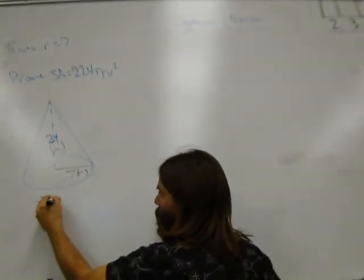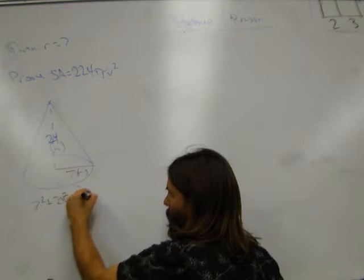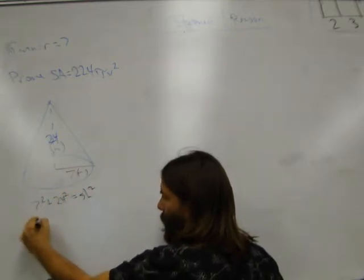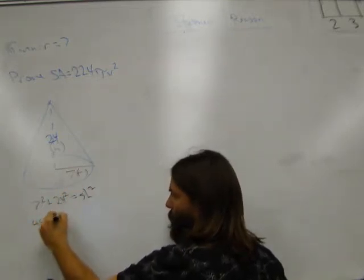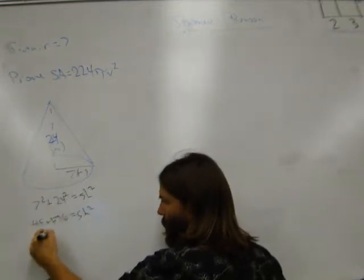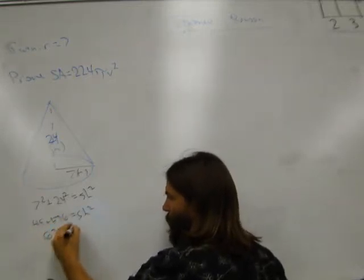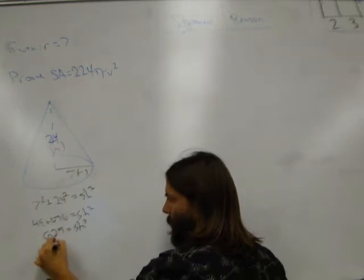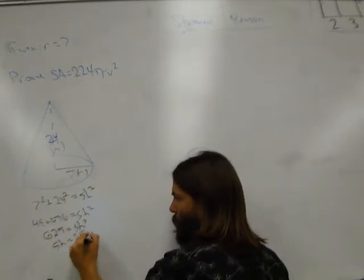It's going to be 7 squared plus 24 squared equals slant height squared. That's 49 plus 576 equals slant height squared. 49 plus 576 is 625 equals slant height squared. So slant height has to equal 25.